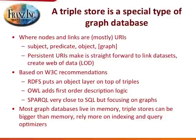A triple store is just a specialization of a graph database. In an RDF triple store, the nodes are always URLs — you can put them on the web and dereference them to get more information. The predicates are URLs too, and these URLs are unique. So you can have RDF databases all over the world, and as long as you use unique names, you can combine them and create a knowledge graph.